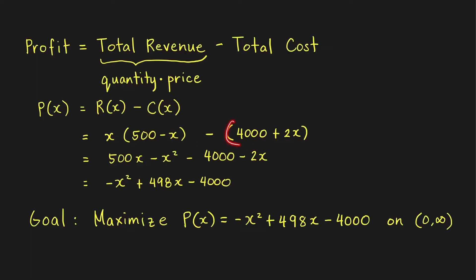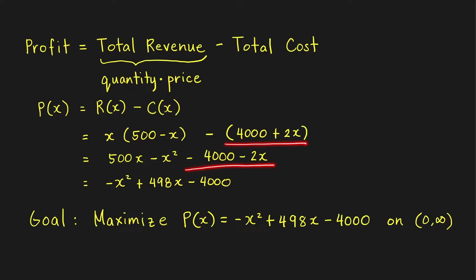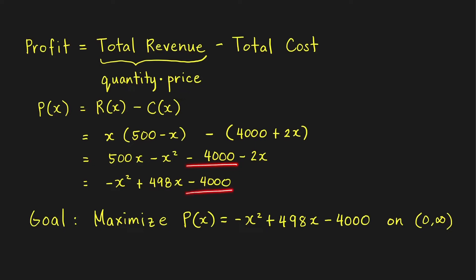The grouping symbol is very important here because it is preceded by a minus sign. The product X times (500 minus X) equals 500X minus X squared. Removing the grouping symbols and changing the signs of all terms within gives minus 4,000 minus 2X. Writing this in decreasing powers of X, we have negative X squared, then 500X minus 2X equals 498X, minus 4,000. So our profit function is P(X) = negative X squared plus 498X minus 4,000.